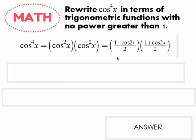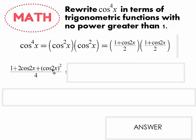We are not done yet, because we need to multiply these together — and once we multiply, the power will get bigger than one. So we go through and FOIL the top, which leaves us with one plus two cosine 2x plus cosine squared 2x, all over four.